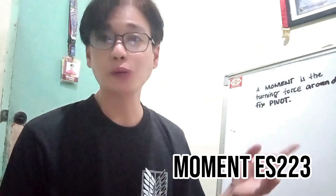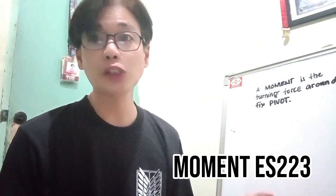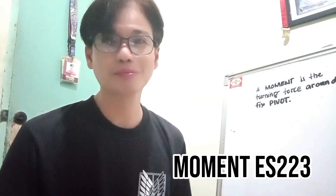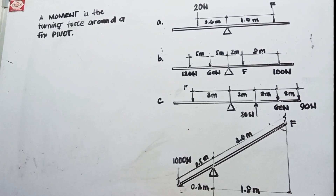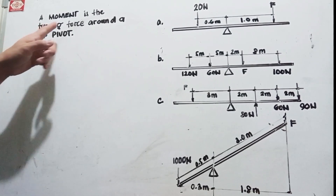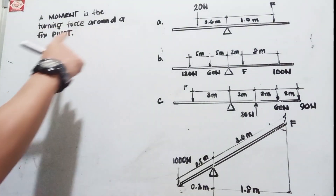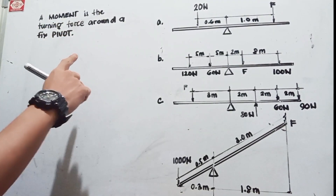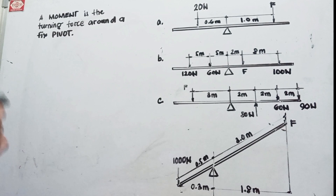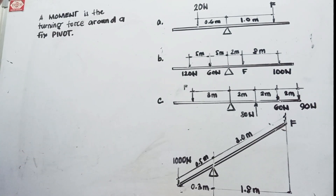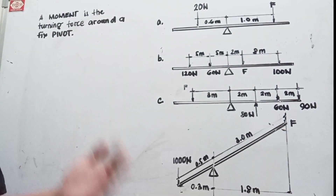I'll be showing you the figure, definition, and I'll be solving the problems. Now remember, a moment is the turning force around a fixed pivot. It's like torque, but torque has a sign which is negative or positive.